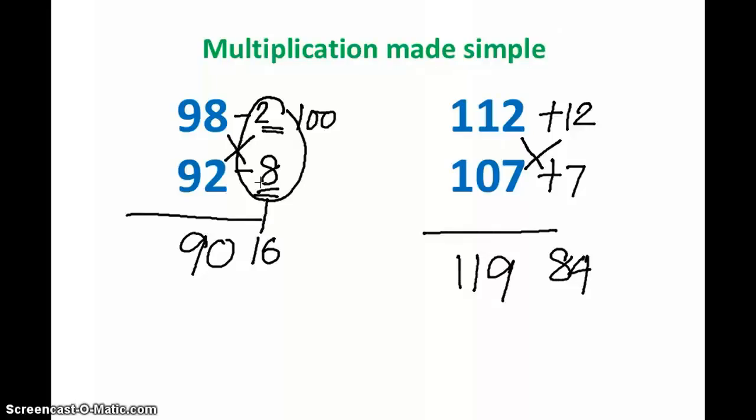So 98 minus 8 gives me 90, and 92 minus 2 gives me 90 as well. So this is 9016, the answer.